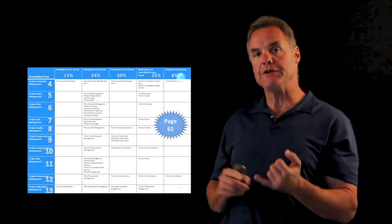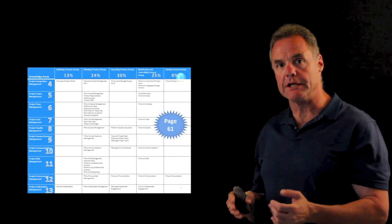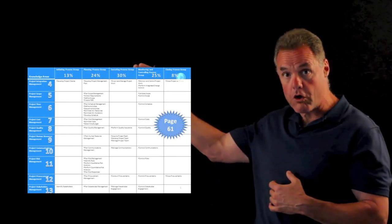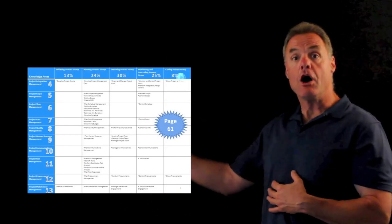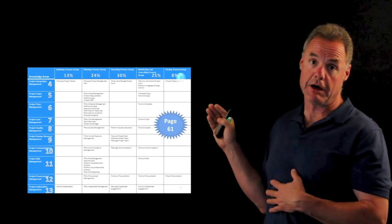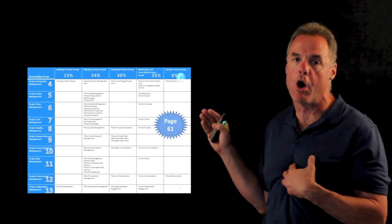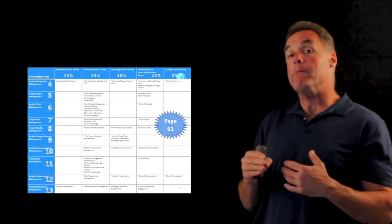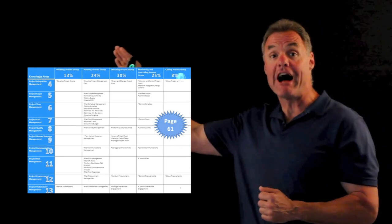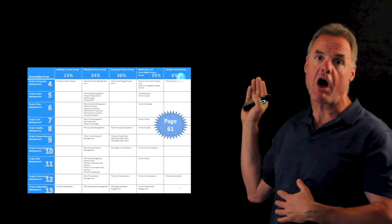Now, secret number two is page 61 of the PMBOK. You'll see that the PMBOK itself, or the body of knowledge, is written from Chapter 4 through Chapter 13 across the knowledge areas of what a project manager has to know to be successful. My course is written across the five process groups that are across the top.